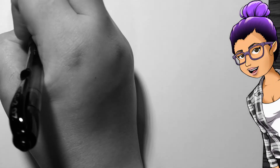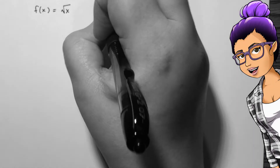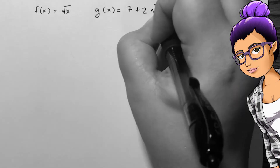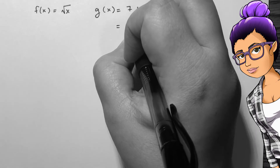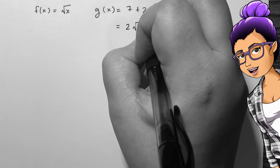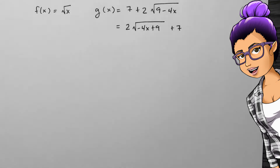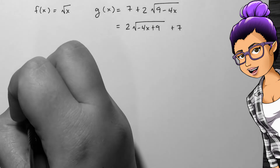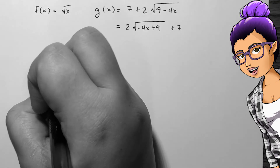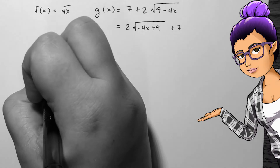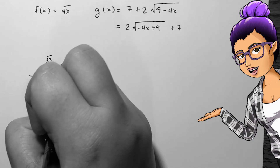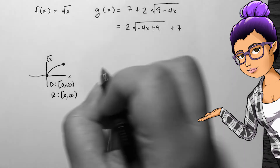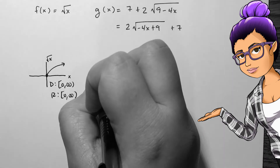For example, if my function f equals the square root of x, and g is 7 plus 2 times the square root of 9 minus 4x, and we want to find the domain and range of g, we'll first write this in a way we're used to handling our transformations. Next, we'll consider the range, since it behaves nicely. The range of f is 0 to infinity, including 0.